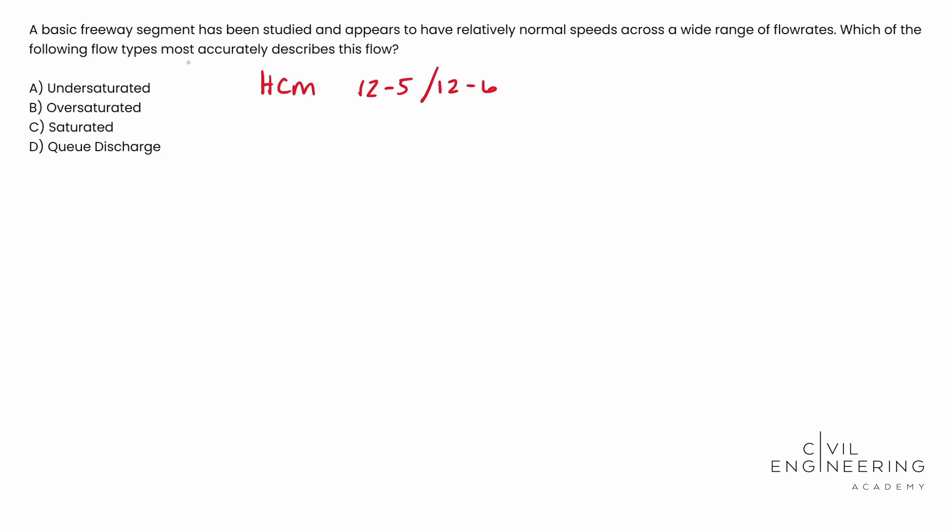But right before that is what's called oversaturated flow. So that's whenever you're going five miles an hour right next to a wreck. The oversaturated flow represents the conditions within the queue that has backed up from a downstream bottleneck. These flow conditions do not reflect the prevailing conditions of the segment itself, but rather the consequences of a downstream problem. All oversaturated flow is considered to be congested.